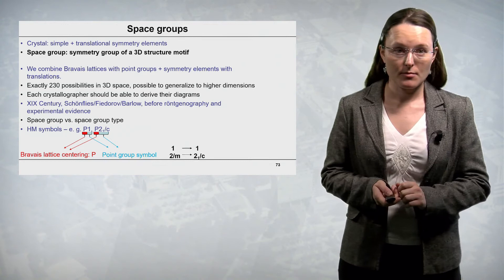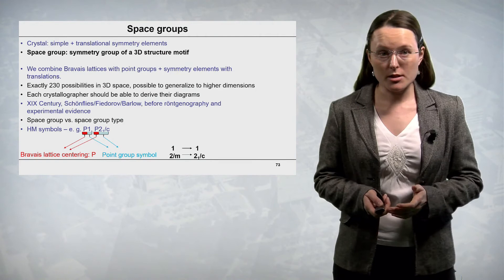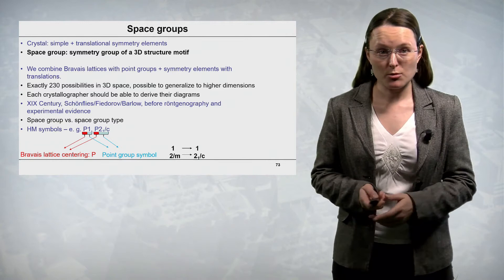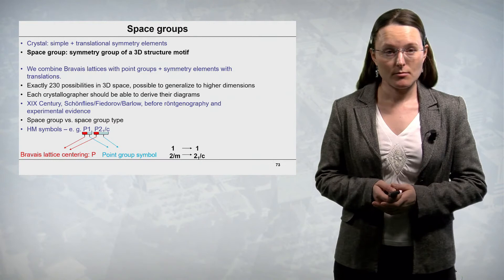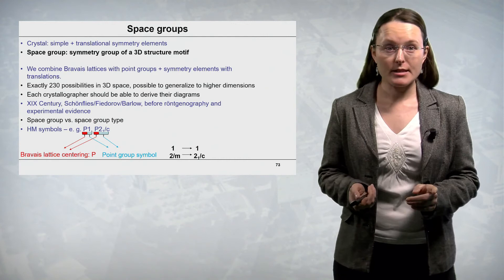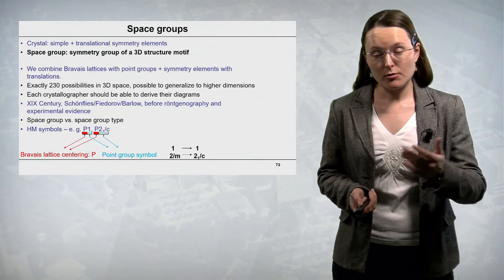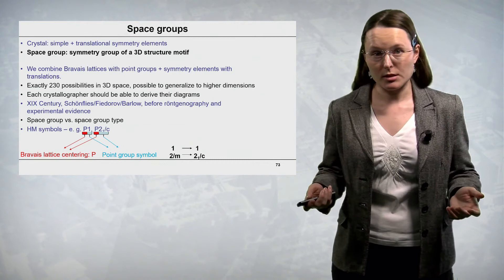These space group types were derived in the 19th century before any experimental evidence of the internal structure of crystals was available. This was done independently in three countries by Schönflies, Fyodorov, and Barlow. We must realize that we often say space group but in reality mean space group type. There are 230 space group types, but a space group is the result of decorating a space group type with a specific structure motif. Since there is an infinite amount of structure motifs, there is an infinite amount of space groups.